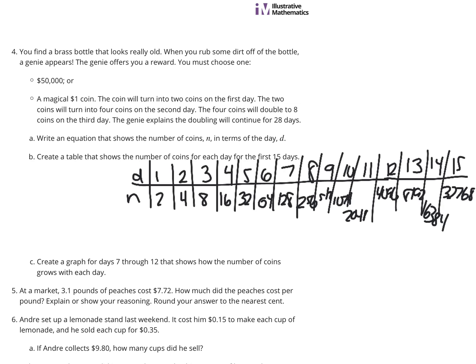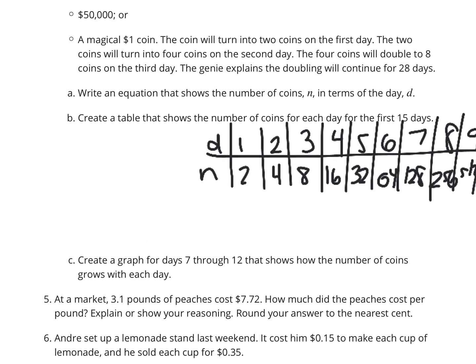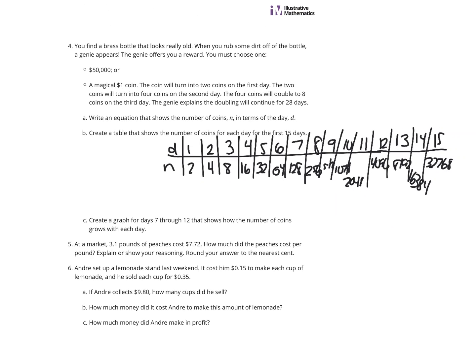Now, what is going on here? Our N is basically equal to 2 to the D power. How do we get that? Where does that come from? Well, 2 to the first is 2; 2 to the second is 4; 2 to the third is 8; 2 to the fourth is 16, and so on.